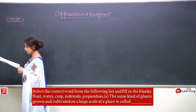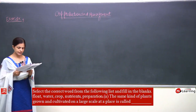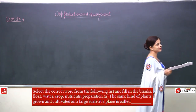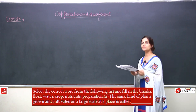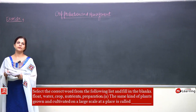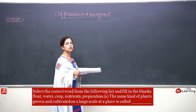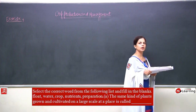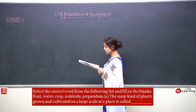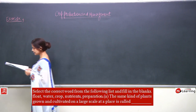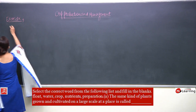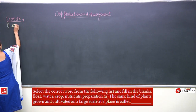The first blank: the same kind of plants grown and cultivated on a large scale at a place is called — as soon as we discussed the keywords I told you, if you are thorough with the keywords it will be easy to fill in the blanks. The answer is crop.